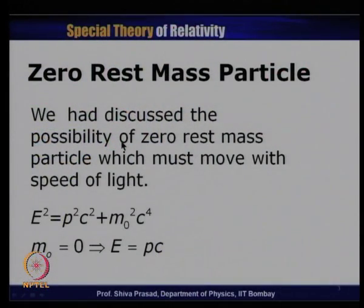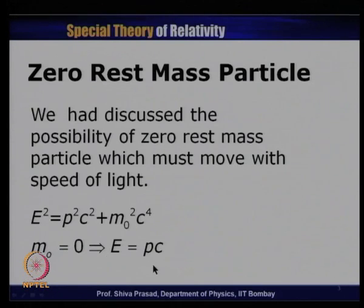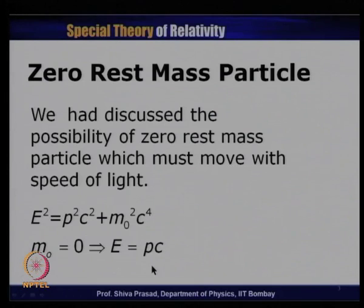In our last lecture we introduced the concept of a zero rest mass particle. Let us go a bit further with this concept today. We said that it is possible for a particle to have finite or nonzero energy and nonzero momentum, but in that case the particle must move with the speed of light. The standard expression for energy and momentum is: E² = p²c² + m₀²c⁴. If m₀ becomes zero, this reduces to E = pc. So for a particle with zero rest mass, energy and momentum are related by E = pc, and the particle must travel at the speed of light.